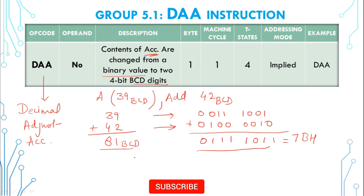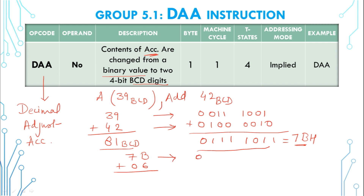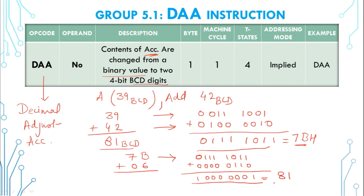We want to convert the binary value into 4-bit BCD digits. Looking at 7B hex, the lower 4 bits B is greater than 9, so we add 06 to this number. 7B plus 06 in binary: 0111 1011 plus 0000 0110 gives 1000 0001, which equals 81. The DAA instruction has finally converted this binary value into the correct BCD value.